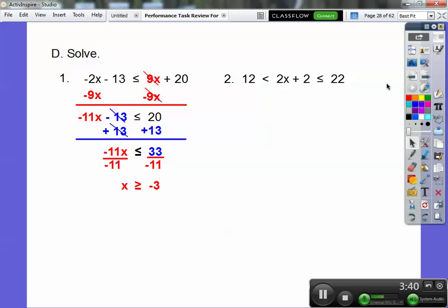Let's do this one. This is an and statement where we have two numbers with x in the middle. We subtract 2 from all parts, then divide by 2, and there's our answer. If we graphed this, it would be an open circle on 5, a closed circle on 10, shaded in between.